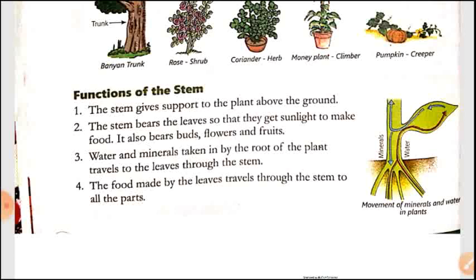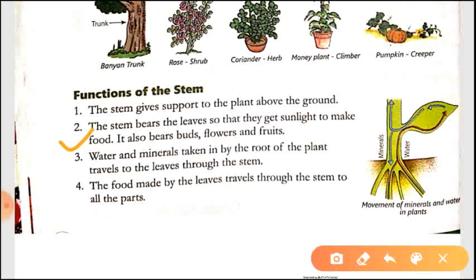The stem gives support to the plant above the ground. Whatever part of the plant is above the ground, the stem always provides support to those parts. The stem also bears the leaves so that they get sunlight to make food. It also bears buds, flowers and fruits. Leaves always grow on the stem so that they can easily get sunlight and the plant can make its own food through photosynthesis.